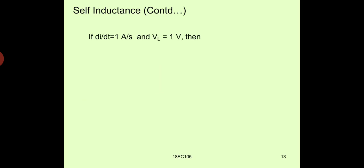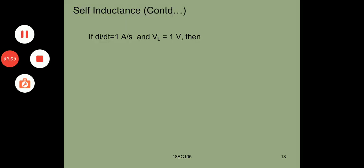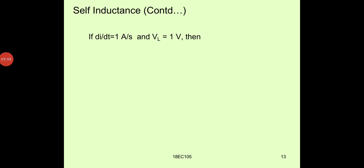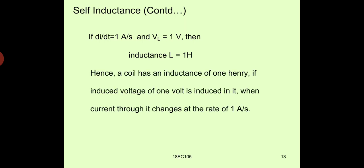If dI/dt is 1 ampere per second and VL is 1 volt, then the inductance L is equal to 1 Henry. Hence, a coil has an inductance of 1 Henry if an induced voltage of 1 volt is induced in it when the current through it changes at the rate of 1 ampere per second.